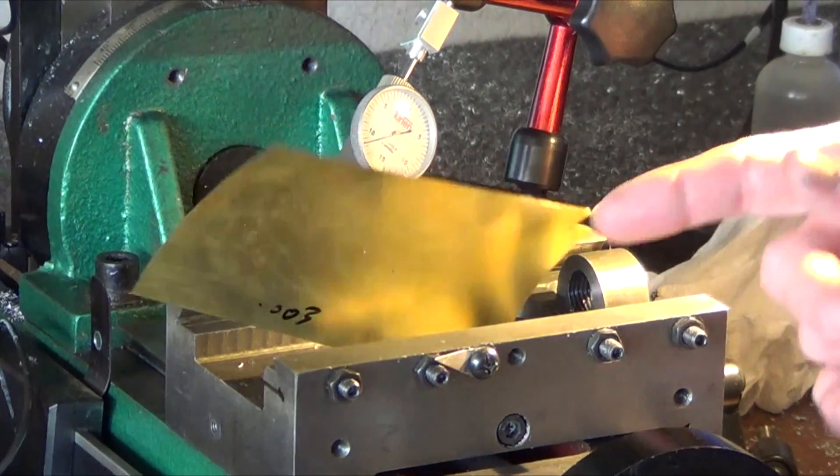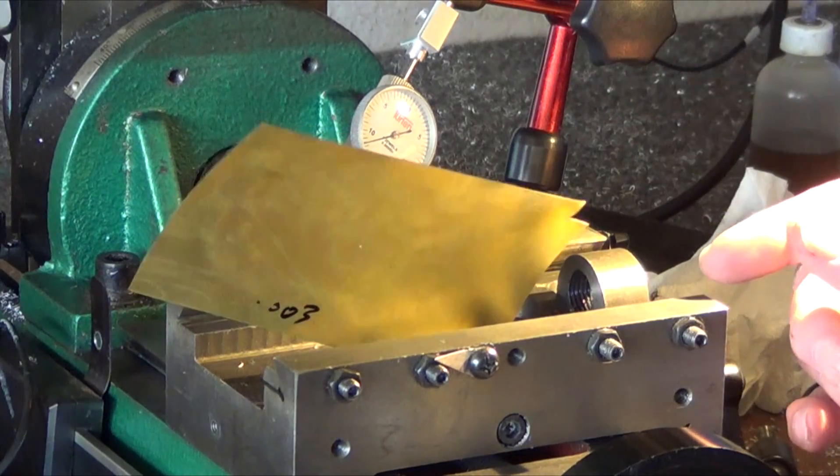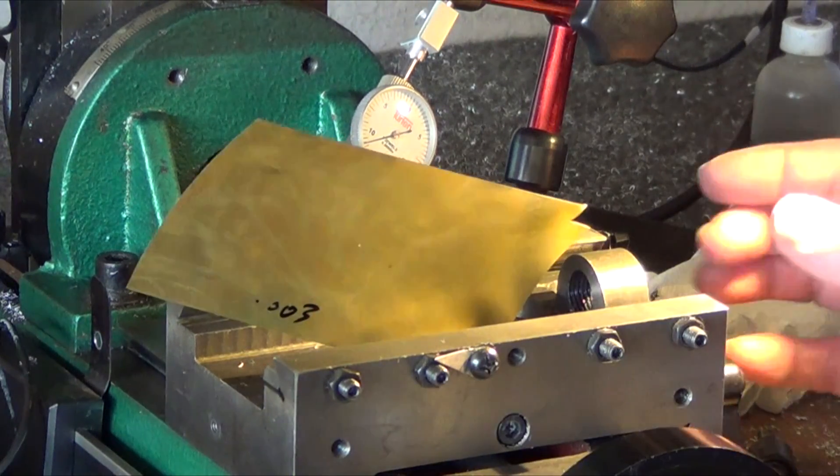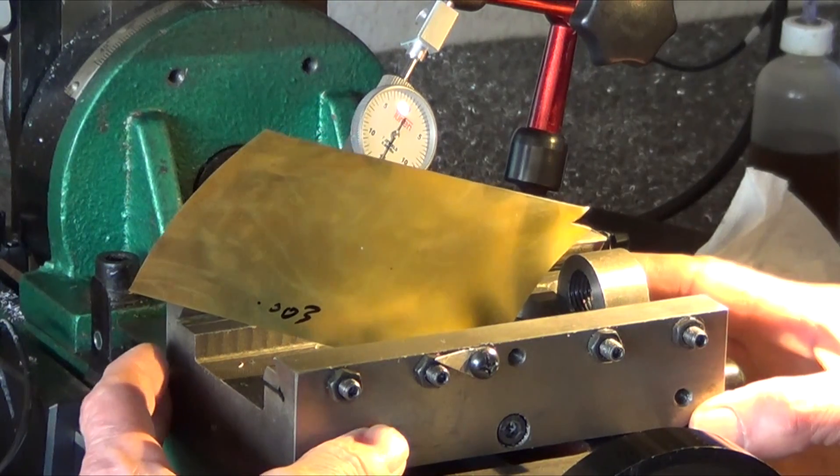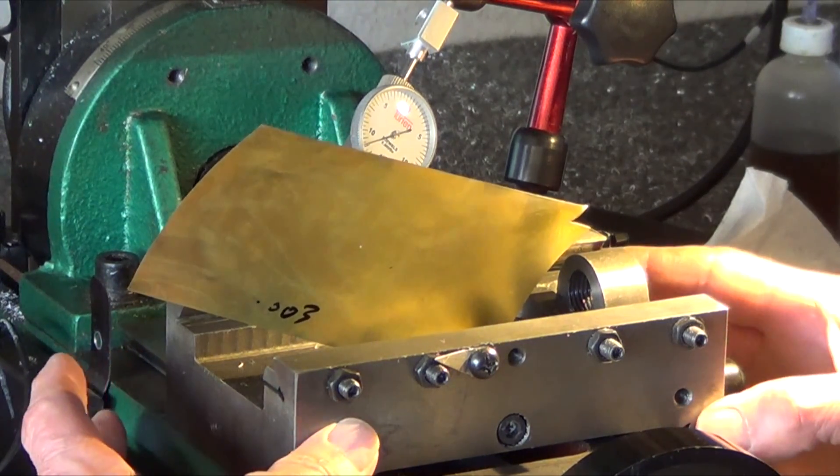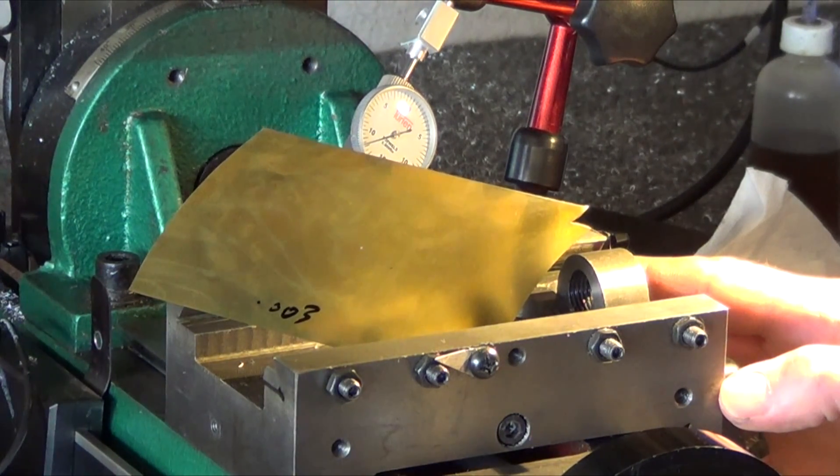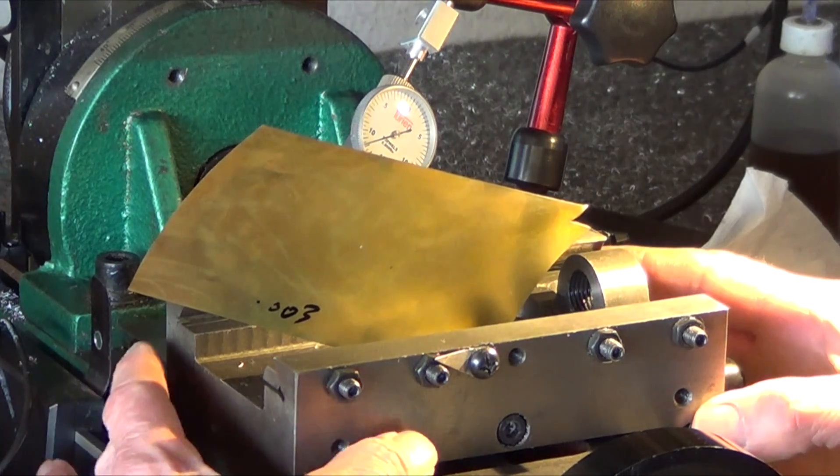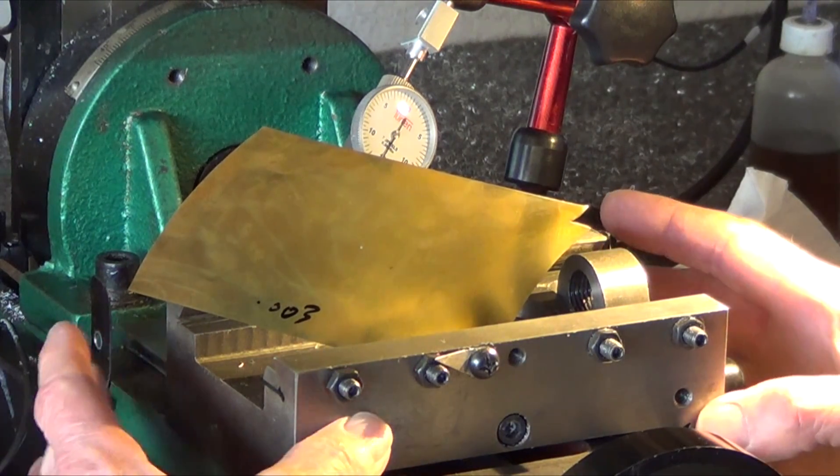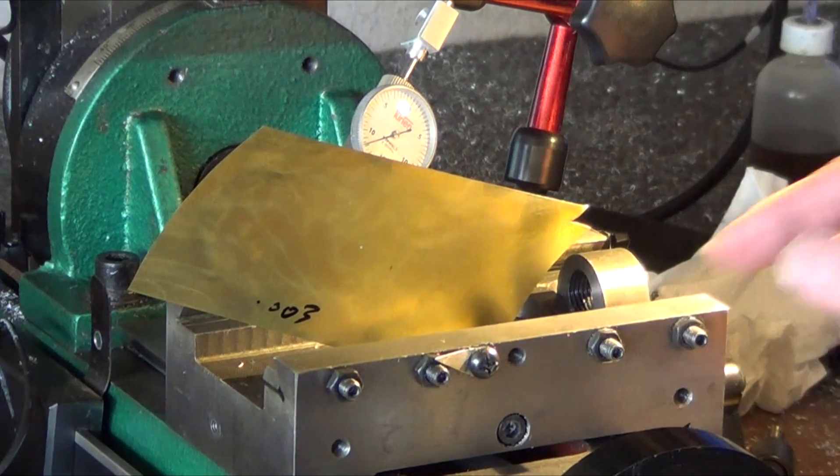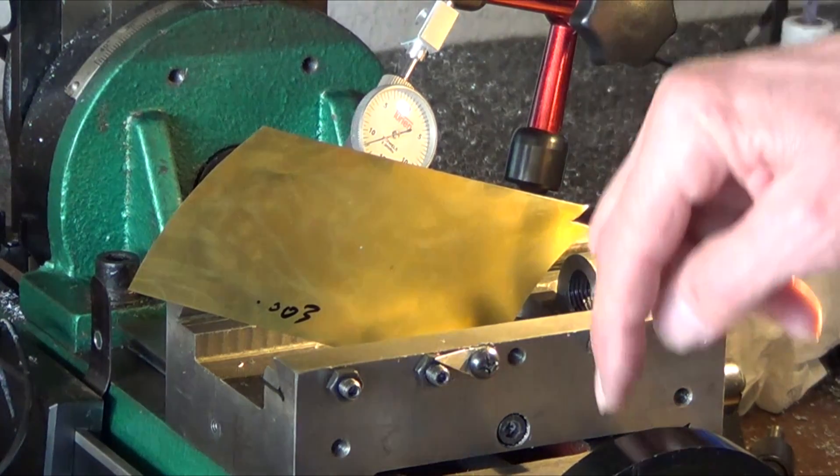I started with a thousandth, then closed it up a bit at two thousandths, a bit more at three thousandths. Now I've got three and a half thousandths on the indicator. I think all the play is gone from the nut and the lead screw, and it's now just in the bearing.